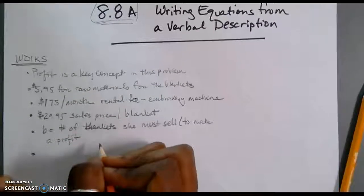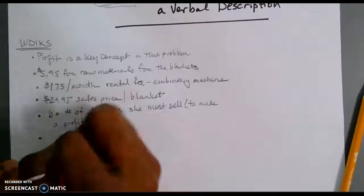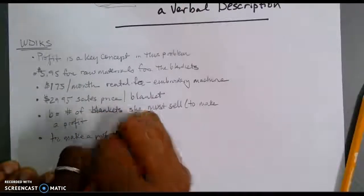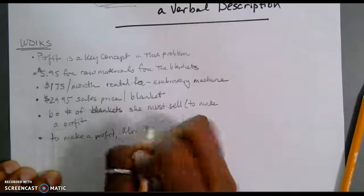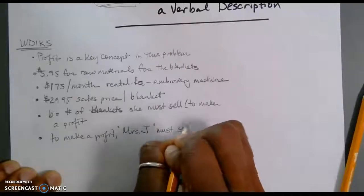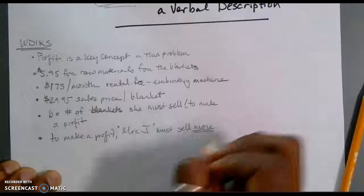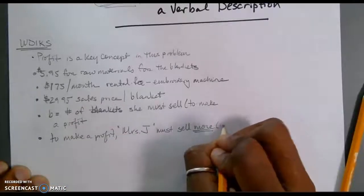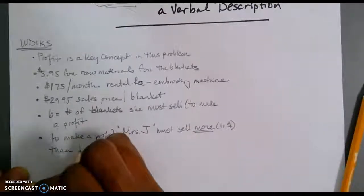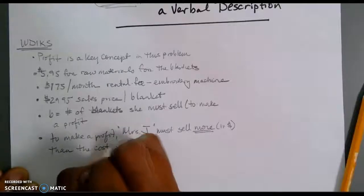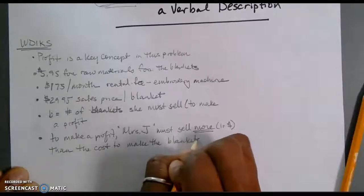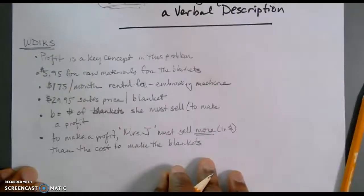Let's go ahead and put some other things that we need to make sure that we understand. To make a profit, we'll just call her Mrs. J. Mrs. J must sell more, and that's in terms of dollars, than the cost to make the blankets. We can call it a blankie. Blankets.